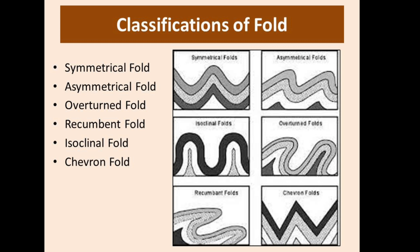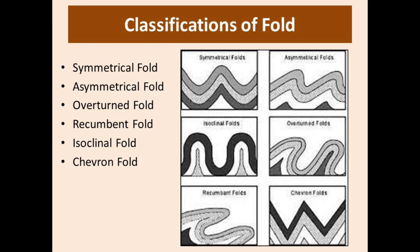Then the isoclinal fold, in which limbs are parallel and both limbs dip at the same angle in the same direction. Isoclinal folds are further divided into three types: vertical isoclinal, in which the axial plane is vertical; overturned isoclinal, in which the axial plane is inclined; and recumbent isoclinal, in which the axial plane is horizontal.